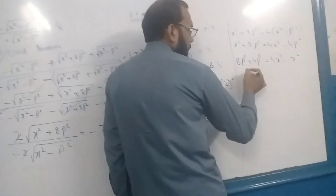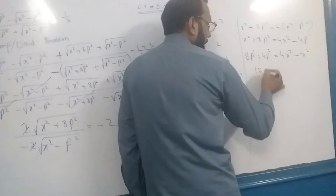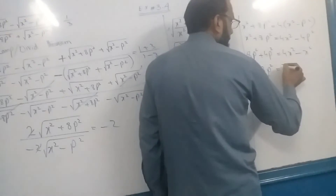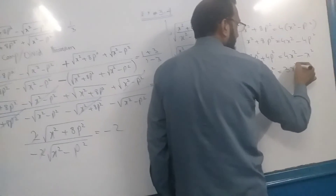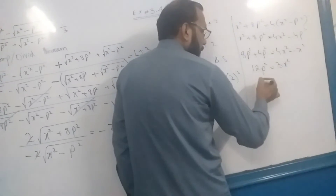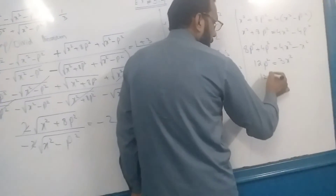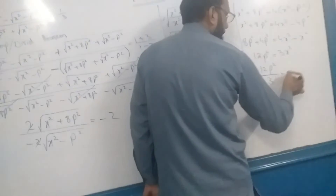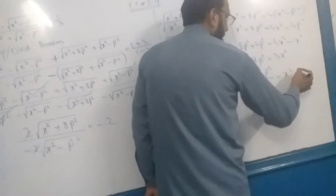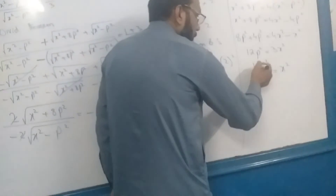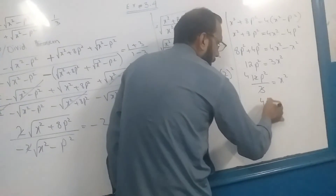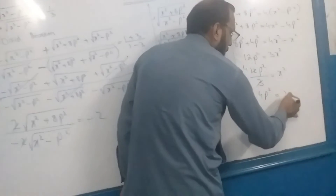8 plus 4 equals 12; 3 times x². 4 minus 1 equals 3, x². So 3 multiplied, divided by x²: 3 times (4 plus 12) equals 4, so 4p² equal to x².